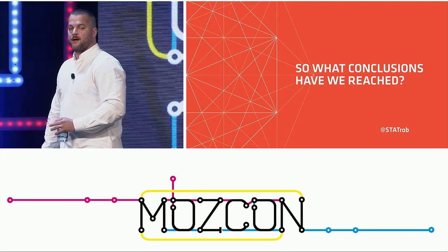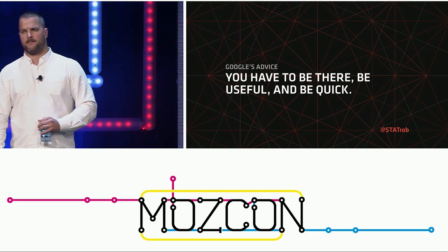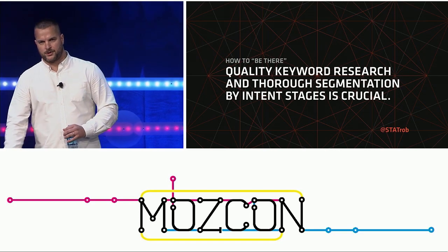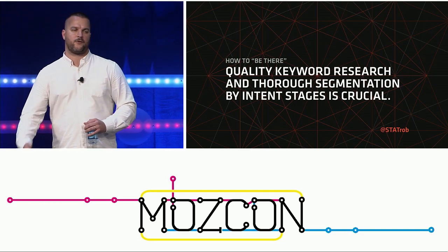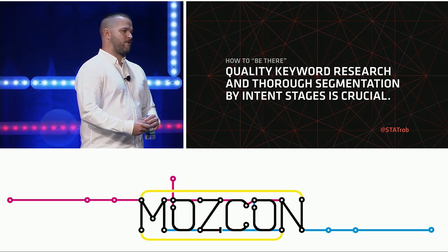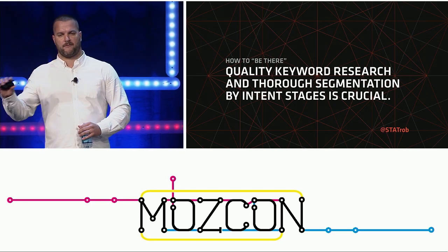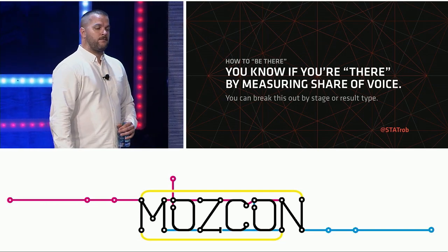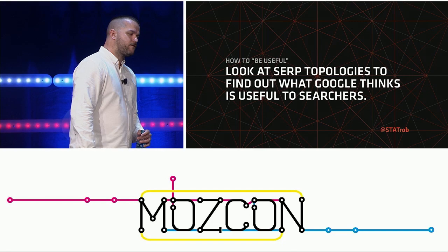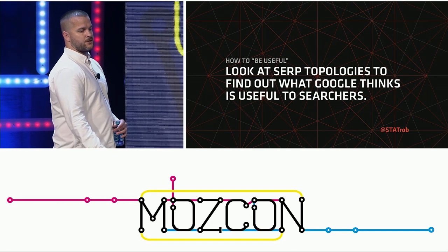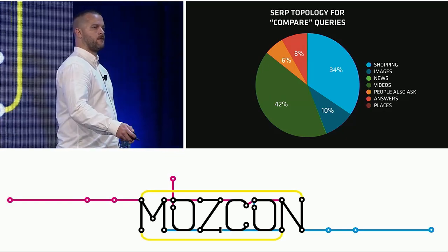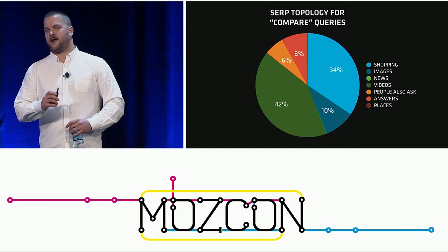So what conclusions have we reached? Remember Google's advice: be there, be useful, be quick. Be there through quality keyword research and thorough segmentation — you cannot shortcut this. Talk to people, interview them, ask what they're looking for, ask why they clicked that result. Get into the mind of the searcher. Know you're there by measuring share of voice. Know you're useful by looking at those topologies — they tell you what Google thinks is useful based on their research. If the data shows people want video, piggyback on Google's learning and see if that's an opportunity for your business.